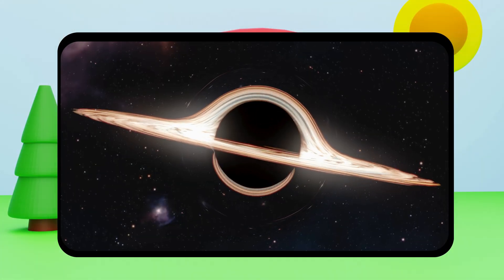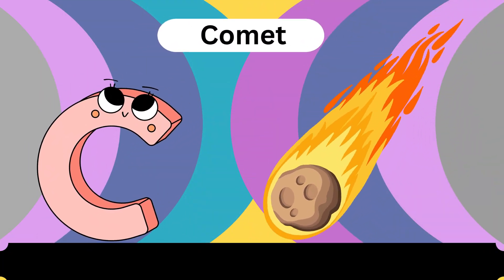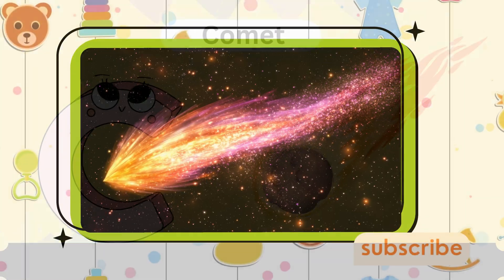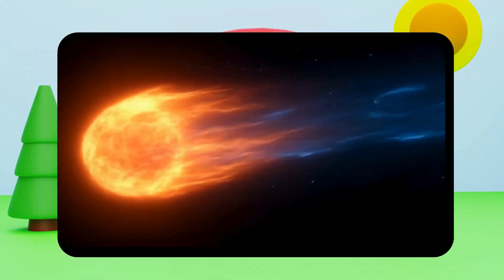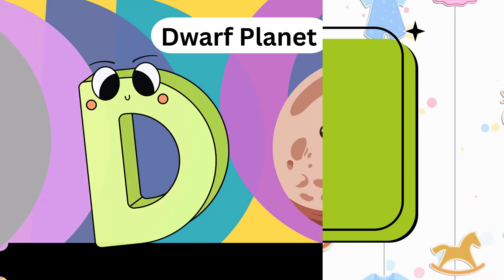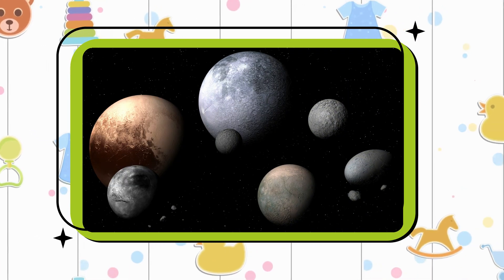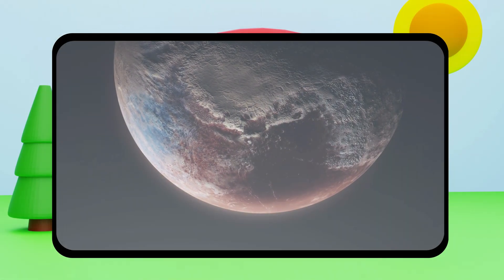B-Black Hole. C is for blossom. E is for Dwarf Planet. Dwarf Planet.